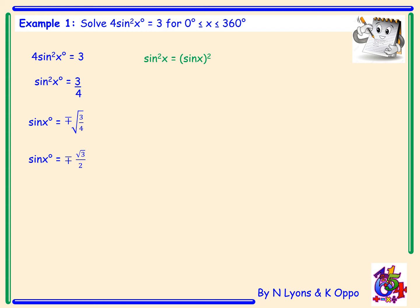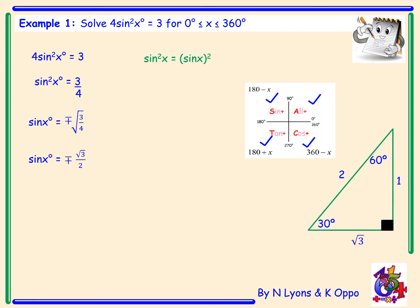Now that we've got sin x as the subject, we draw our CAST diagram. As we're looking for sin x equal to plus or minus root 3 over 2, we're looking for an angle in every single quadrant. From there we do inverse sine of root 3 over 2 or check our exact value triangle — we're looking for an angle with opposite root 3 and hypotenuse 2, which is 60 degrees.